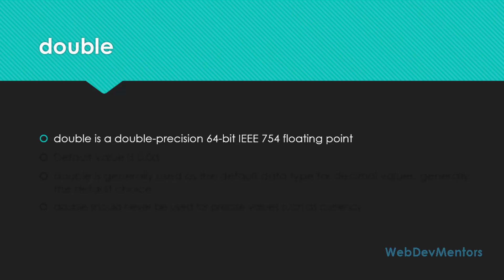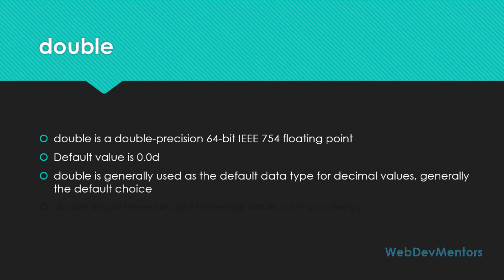Double is a double precision 64-bit IEEE 754 floating point. It can be used to store floating point and decimal values. The first preference that programmers or developers take for decimal values is double. Double's default value is 0.0d, where d stands for double. Double is generally used as the default data type for decimal values — it's the default choice for every Java developer or programmer.